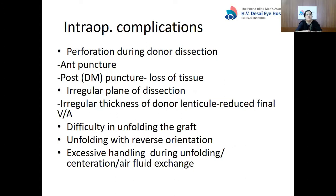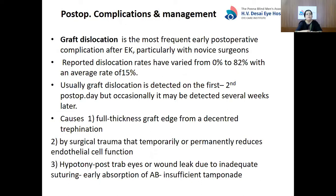Intraoperative complications include perforation during donor dissection. Anterior puncture is more common and is a lesser hazard, but posterior DM puncture can even mean loss of tissue. There can be an irregular plane of dissection resulting in irregular thickness of the donor lenticule, which affects final visual acuity. There can be difficulty in unfolding the graft, unfolding with a reverse orientation, and excessive handling during surgery — especially during unfolding, centration, or air-fluid exchange. Graft dislocation is the most frequent early post-operative complication after EK, particularly with novice surgeons.